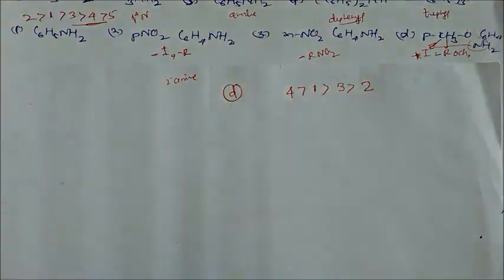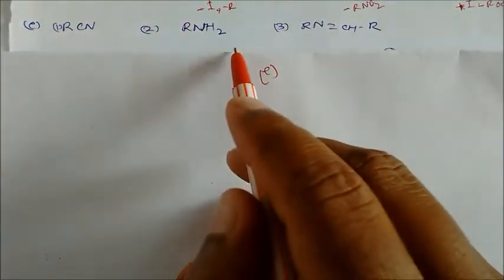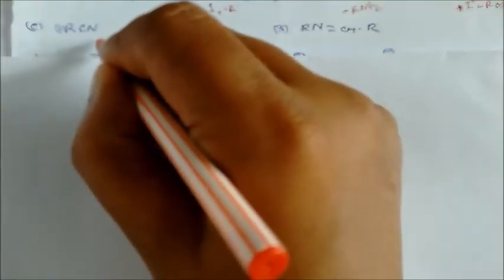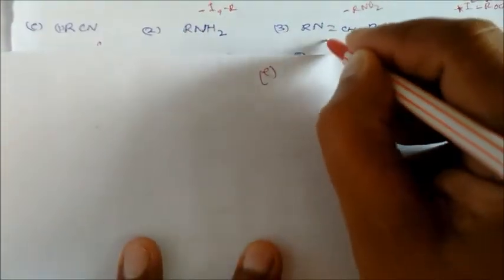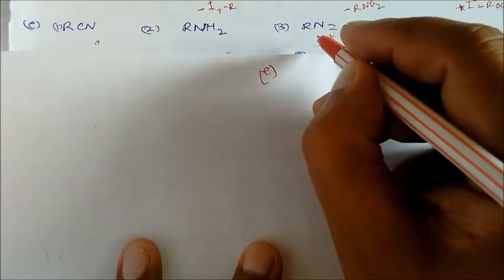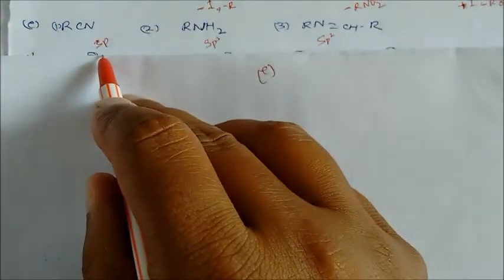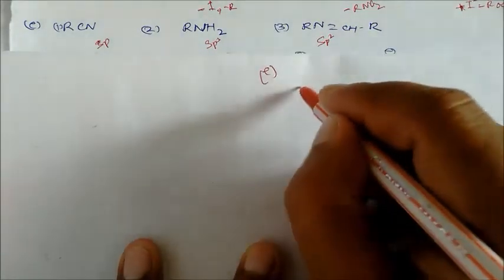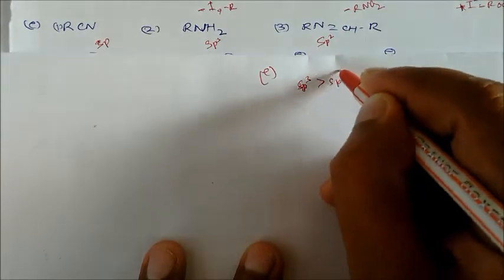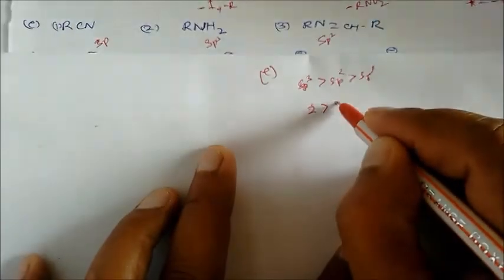Comparing RCN, RNH2, and RNHCHR in terms of basicity: the nitrogen in RCN is sp-hybridized, RNH2 is sp3-hybridized, and RNHCHR involves sp2 hybridization. Since sp3 nitrogen is most basic and sp nitrogen is least basic, the order is sp3 > sp2 > sp.